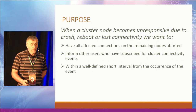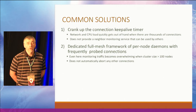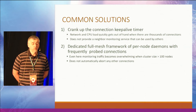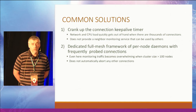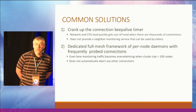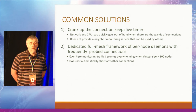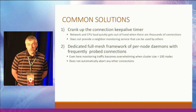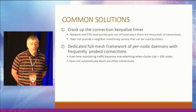If you look at common solutions — I would call them naive — one simple approach is to speed up the connection keepalive timer to some ridiculous sub-second level. This works: you get what you want, the connection is aborted if the peer becomes unavailable. But if you have thousands or tens of thousands of such connections, the CPU load and network load generated by this supervision grows linearly with the number of connections and goes out of hand. This is not a sustainable solution, and apart from that it does not provide any neighbor monitoring service as described in the second task.